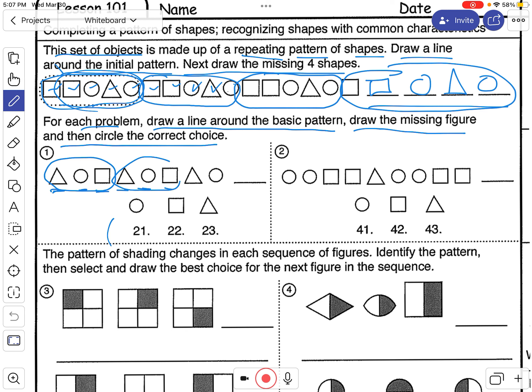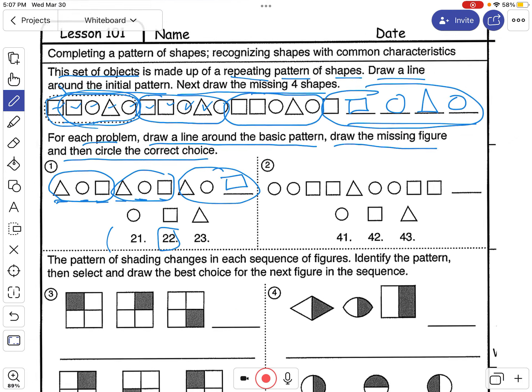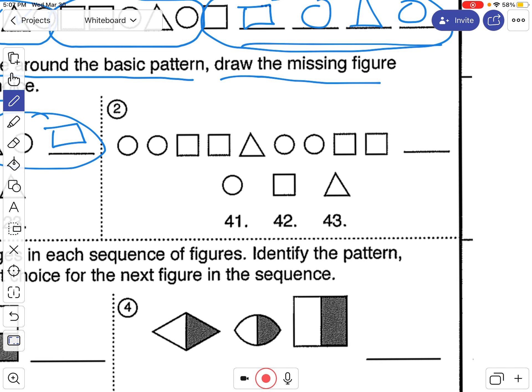So you should have circled that, circled that. And then what goes in here? A square because it goes triangle, circle, square. So you should have picked 22. Okay, pause the video, try number two, and then turn it back on.